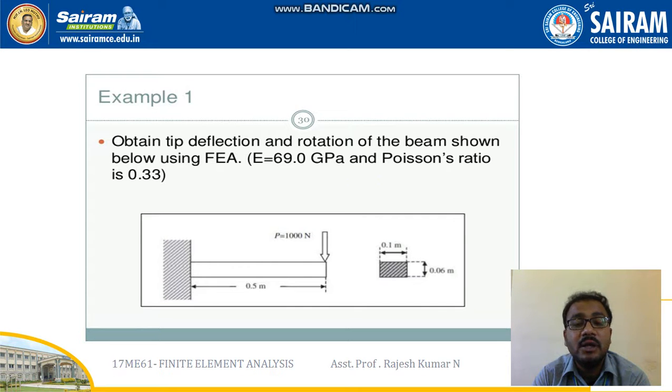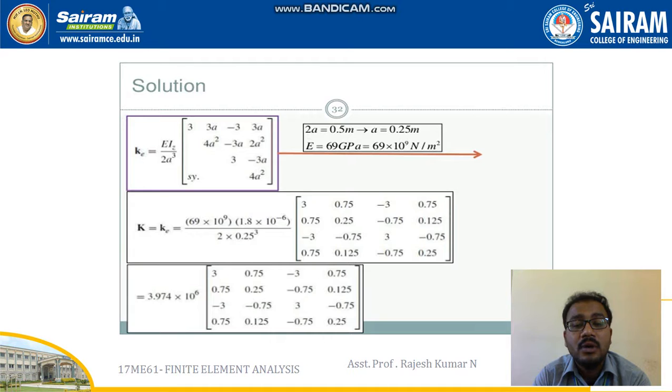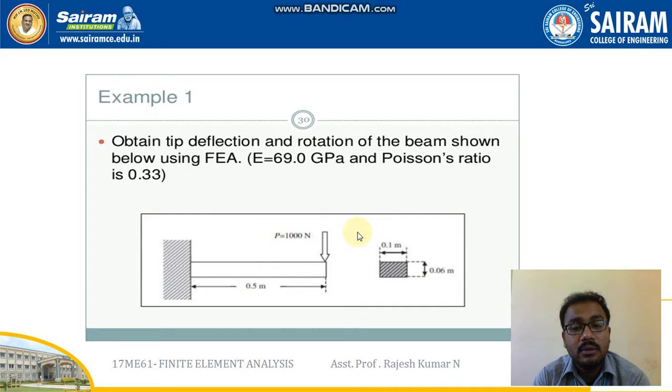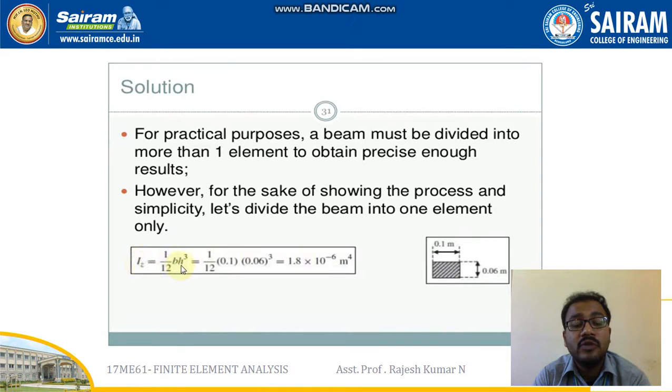In this video we'll be continuing the same problem. Let's have a brief recollection. A cantilever beam, left side is fixed, right side a point load is acting, rectangular cross section. Since point load is given only on the right side, only v2 value, so v1 and theta 1 is equal to 0.